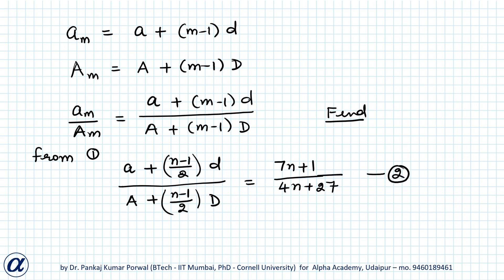If I look at the left hand side of equation 2, I see that if I can find a value of n such that (n-1)/2 equals m-1, then the left hand side of equation 2 will equal the ratio I want to find. Thus, the right hand side of equation 2 for that value of n will be my desired ratio.